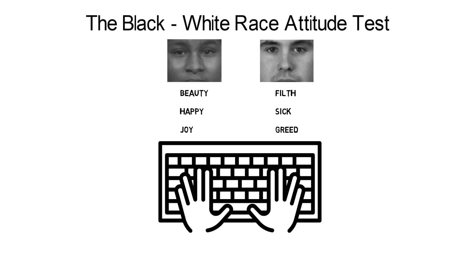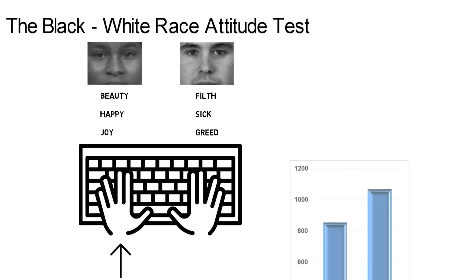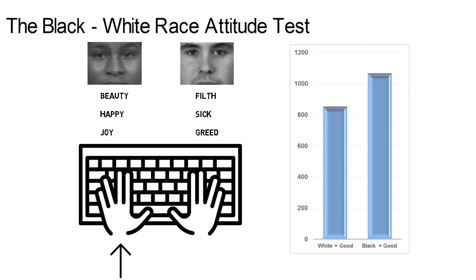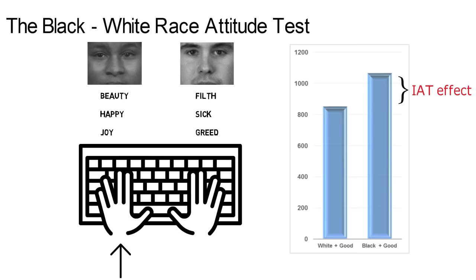Press the same key for white faces and bad words, and another same key for black faces and good words. In these runs, most players can't quite get into a groove, take longer to respond, and make more mistakes by hitting the wrong key. The average time differential between the two arrangements — white plus good as compared to black plus good — is called the IAT effect and reflects the strength of an attitude. On average, we might be a fraction of a second faster pairing white faces with good words than black faces with good words, meaning that on average we have an implicit preference for whites.